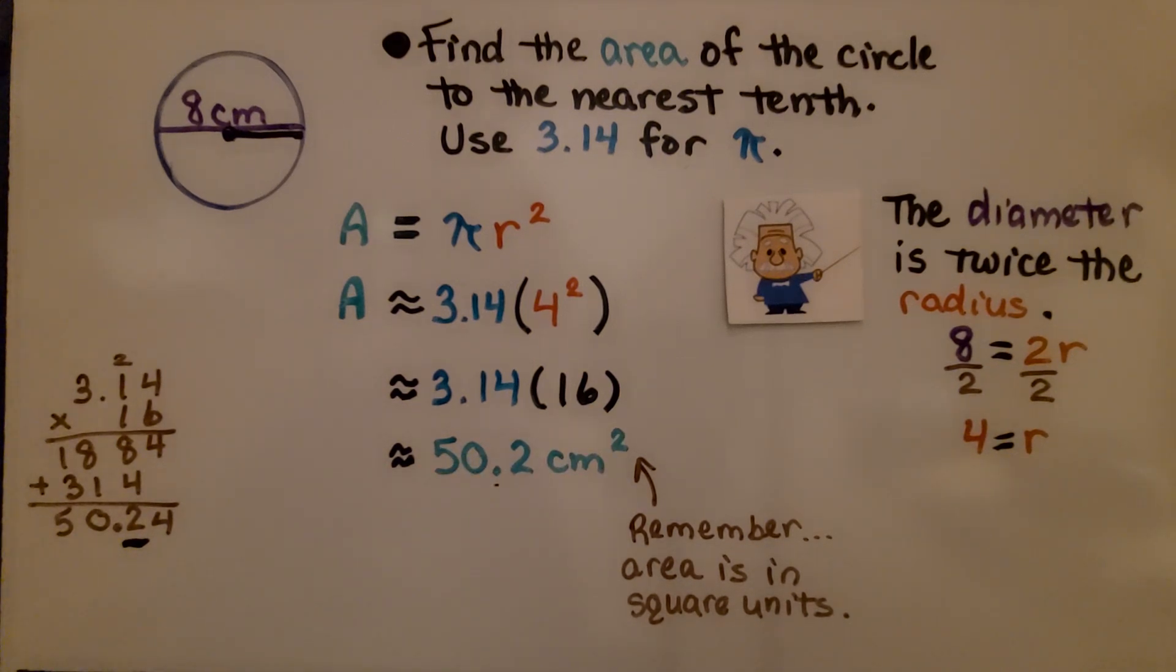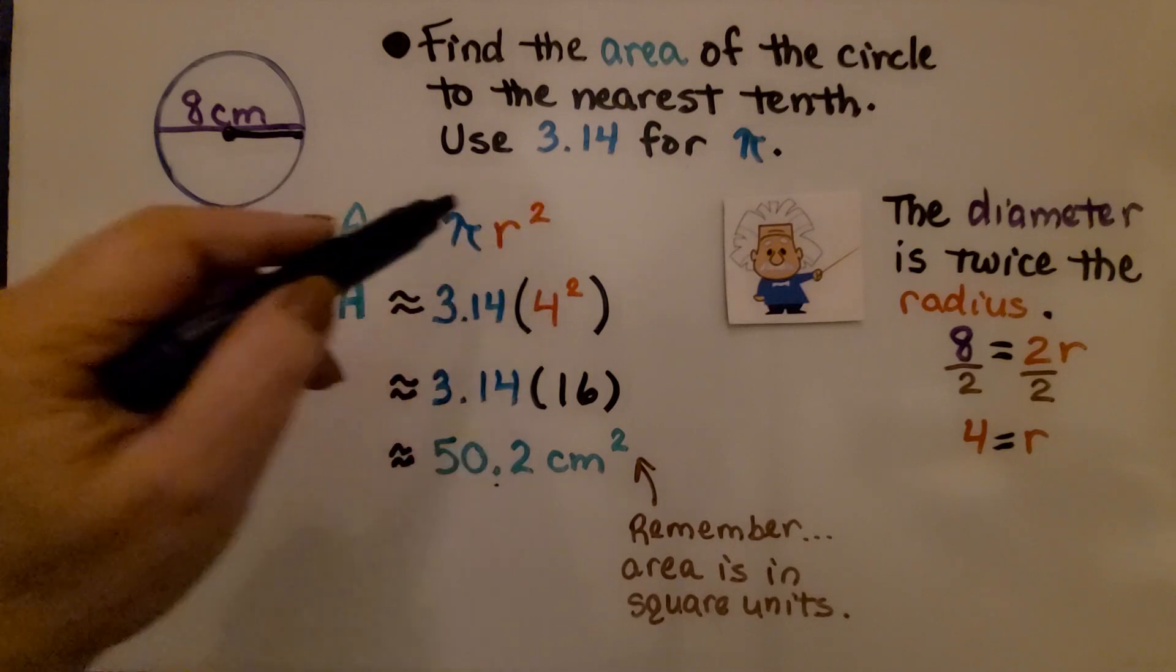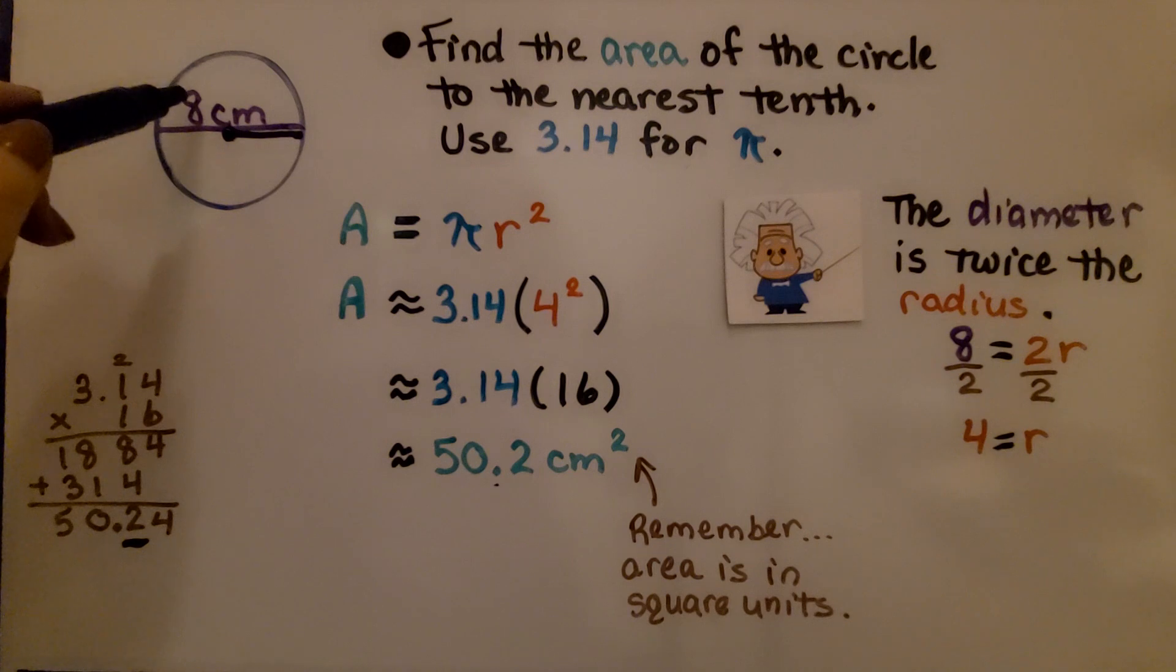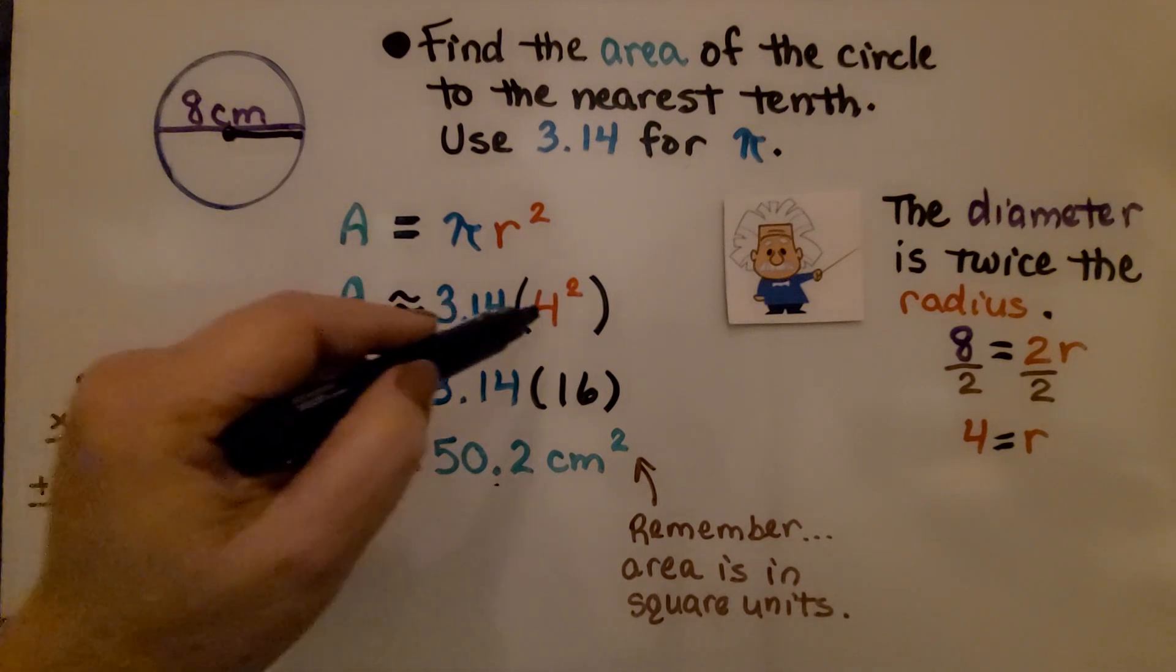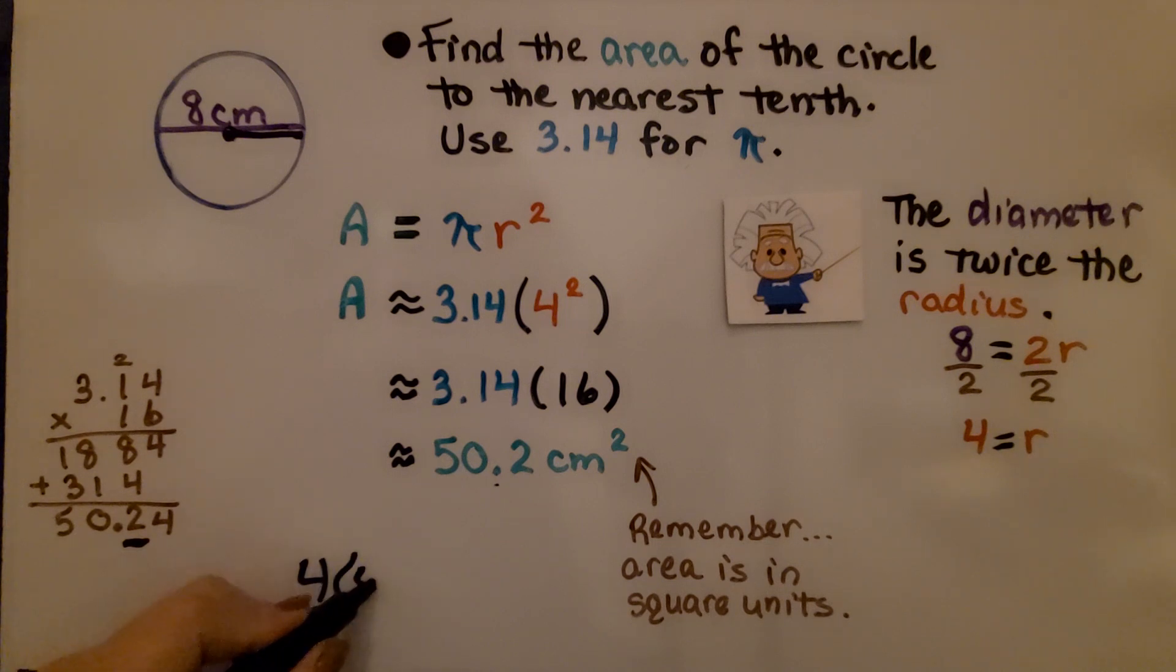Now, another thing I want to point out is some people may get confused and think, well, if this is radius squared and we know the diameter is twice the radius, we can just use the eight, but we can't. Because four to the second power means four times four. It doesn't mean four plus four.